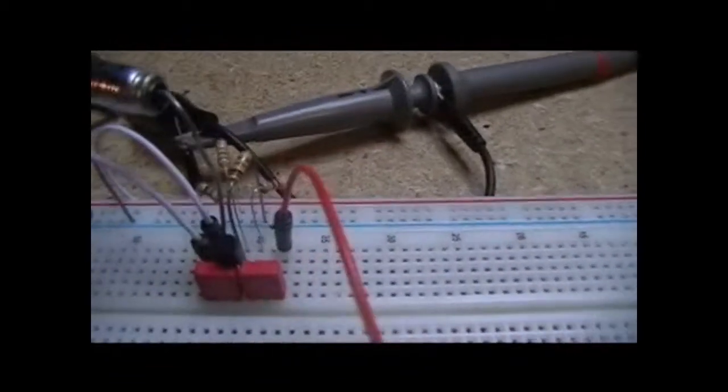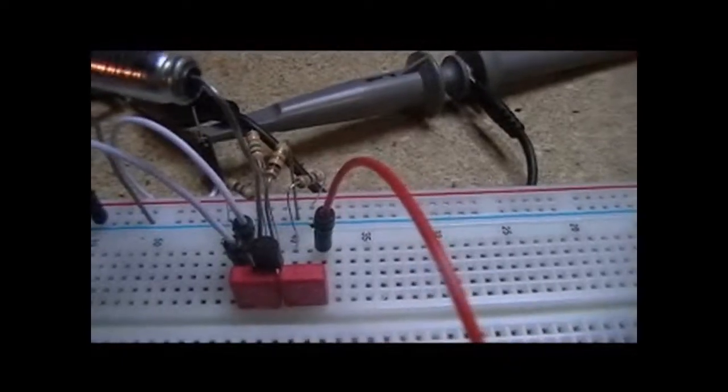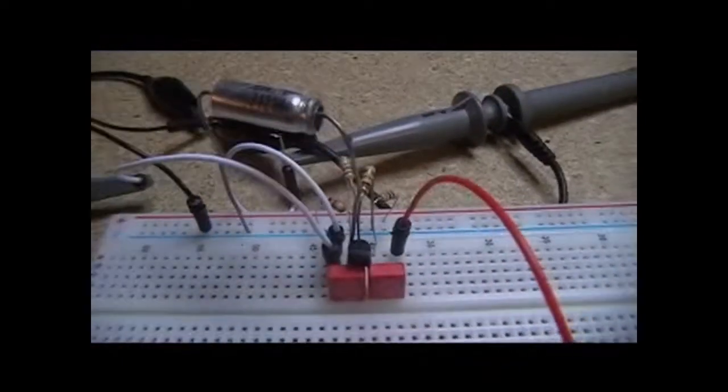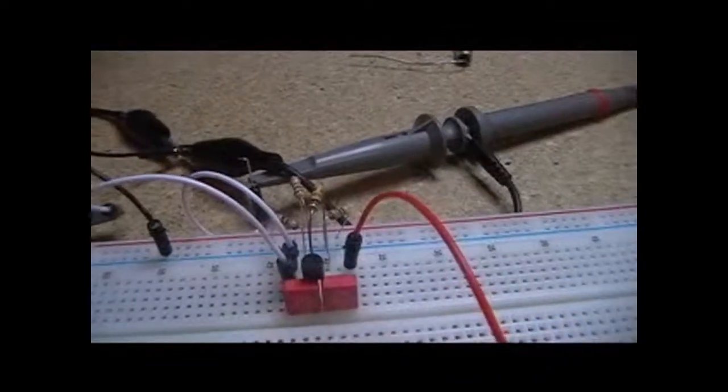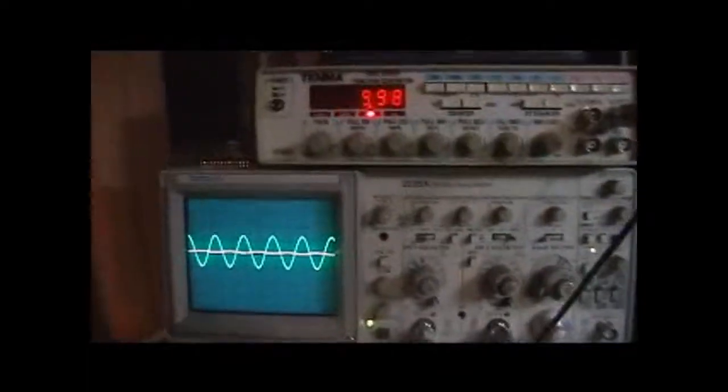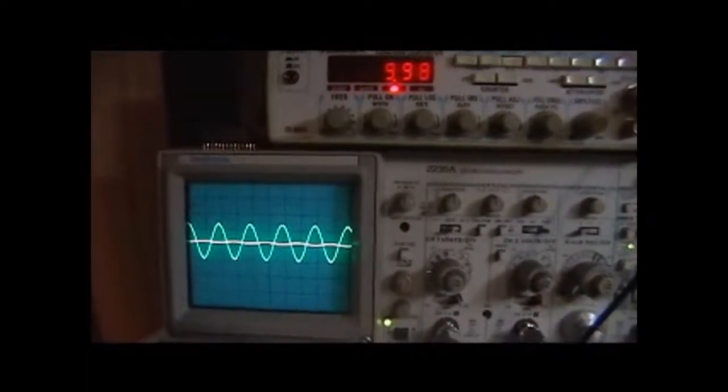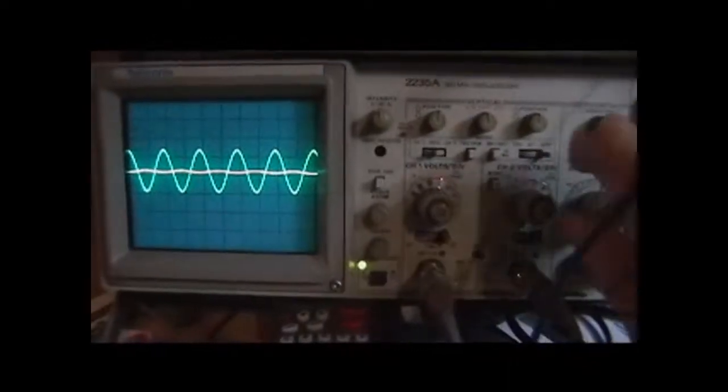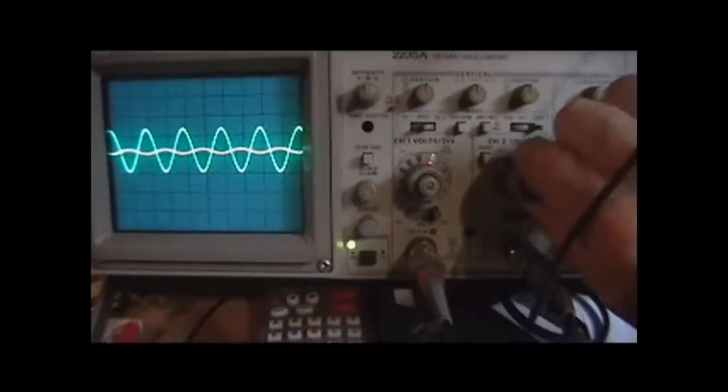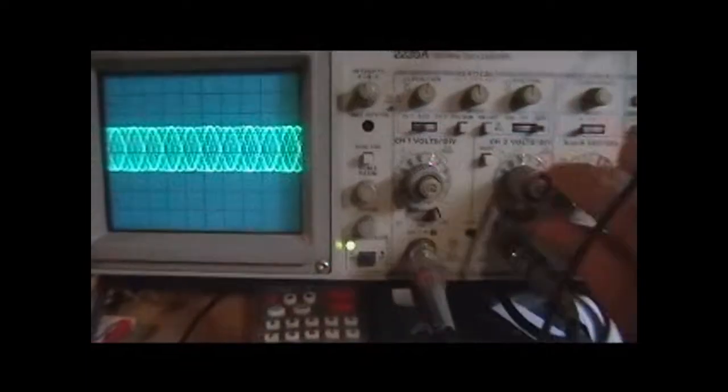But if you take this bypass capacitor out, what you'll find on the scope is you've got virtually no gain. In fact, if I roll the scope on channel 2 back to the same 20 millivolts,